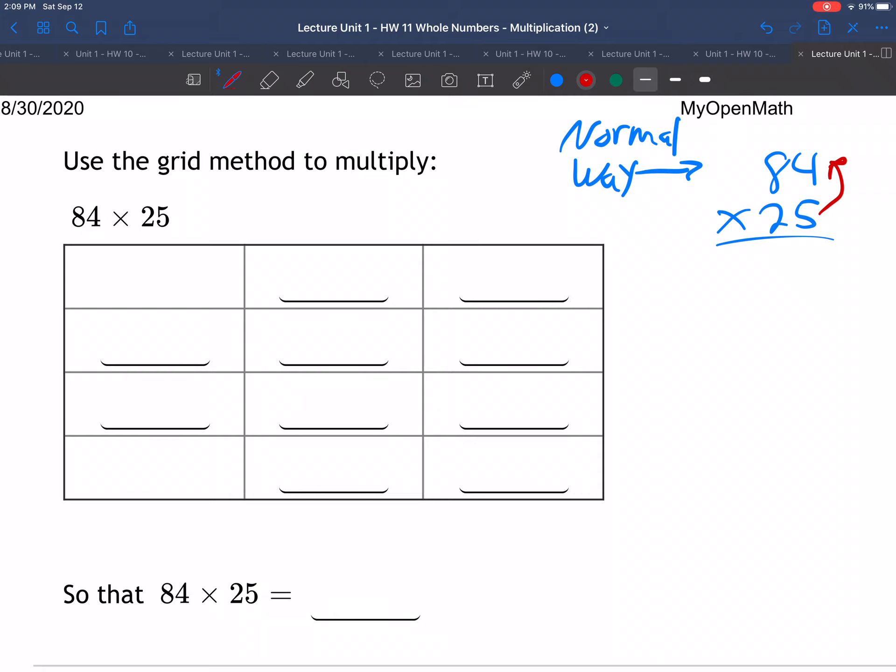You take 5 times 4. You start here, don't you? 5 times 4 is 20. You write the carry the 2, bring down the 0. And then the 5 times the 8 is 40, and then you add the 2, 42, right? That's the first part. And then that guy's done. Come back in here and get rid of that guy.